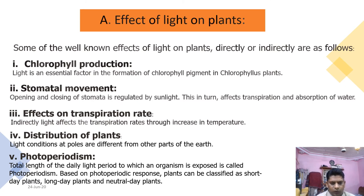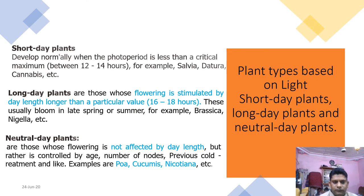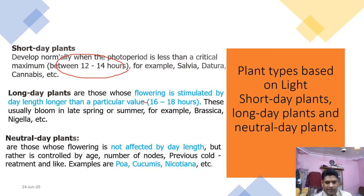Effects of light on plants include chlorophyll production, stomatal movement, transpiration rate, distribution of plants, and photoperiodism. Photoperiodism refers to the length of daylight. Plants can be divided into short-day plants, long-day plants, and neutral-day plants according to the length of time they receive light. Short-day plants prefer 12 to 14 hours of light — for example, Salvia and Datura. Long-day plants prefer 16 to 18 hours for flowering — examples include grasses, Seshika, and Nigella. Neutral-day plants are not affected by the length of light but by age or number of nodes — examples include Boa, Coreopsis, and Nicotiana.